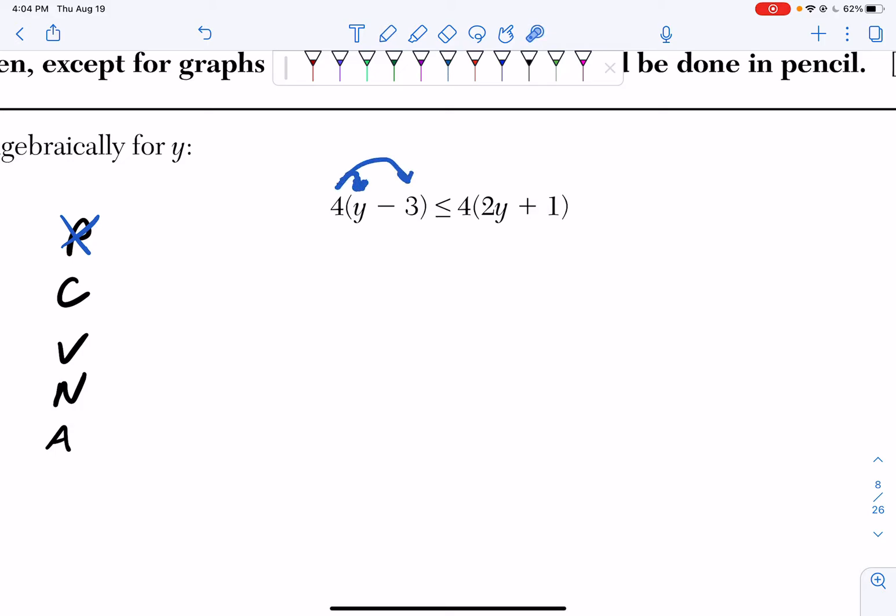So 4 times y is 4y, 4 times a negative 3 is minus 12, and that's less than or equal to. Now I'm going to distribute 4 to 2y and 1. 4 times 2y is 8y, and then 4 times 1 is a positive 4.